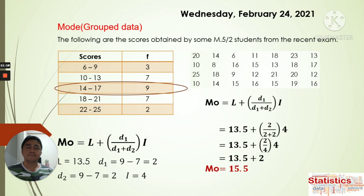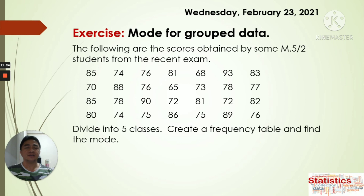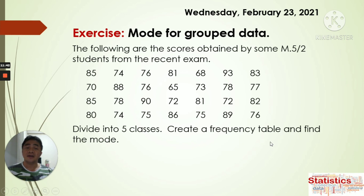Do you have any questions? I hope you understand. Now we have our activity — using the same method from the last example: scores obtained by some Grade 5-3 students from the recent exam. Divide into five classes, create a frequency table, and find the mode. That's all for today — see you again next time, bye bye!